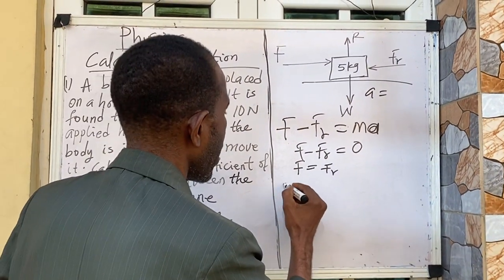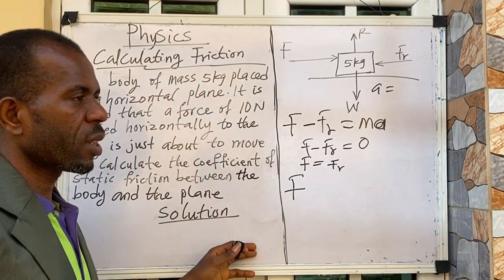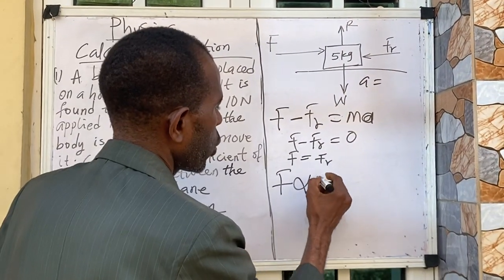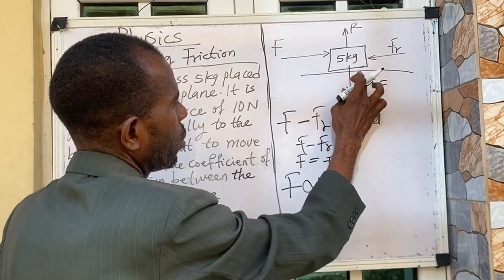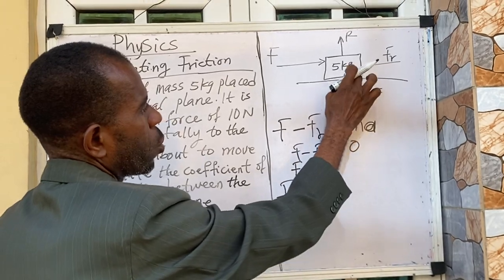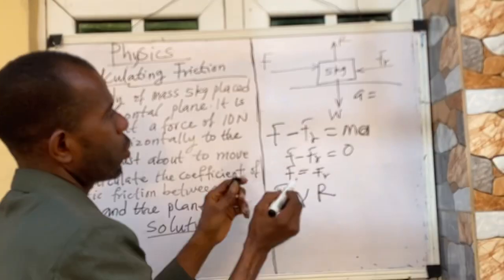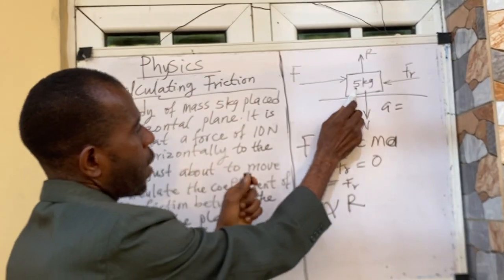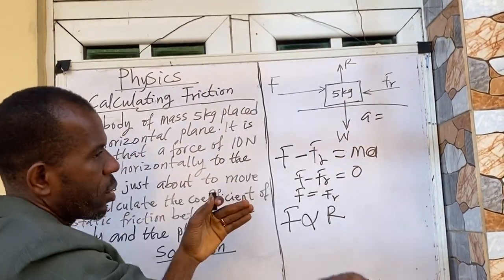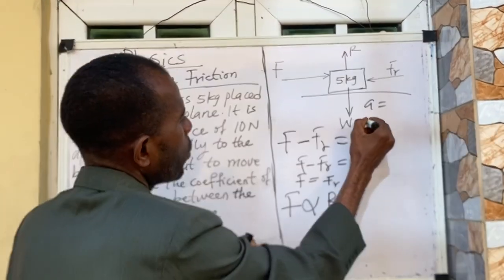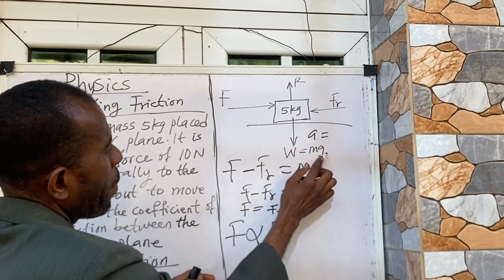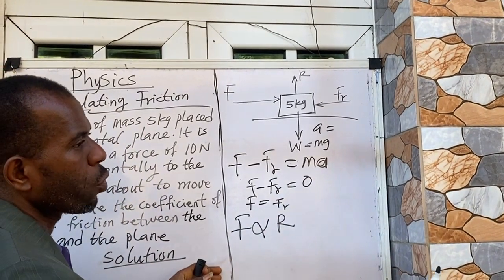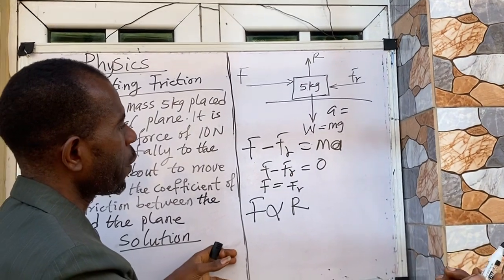So in that case we are going to look at our fifth law that says that F is proportional to normal reaction. This is the normal reaction that this surface is acting on this body. So the weight of the body here, W, is acting downward. Then it is going to give me mg, which is this mass here multiplied by acceleration due to gravity.